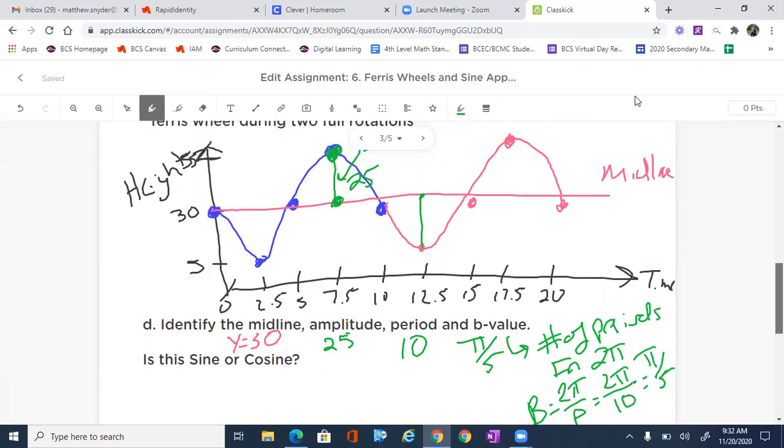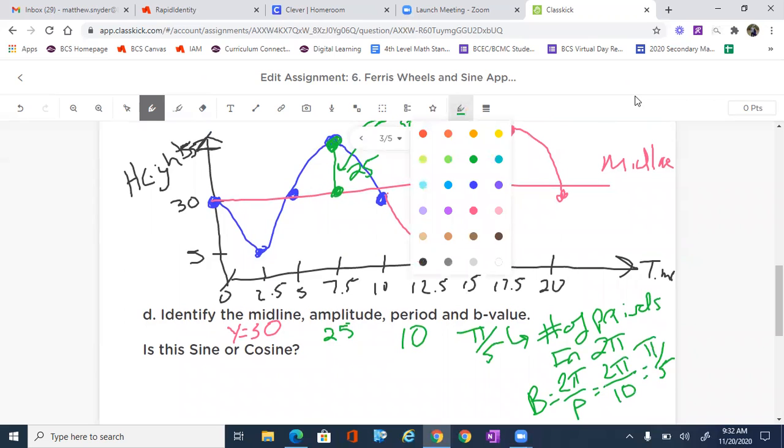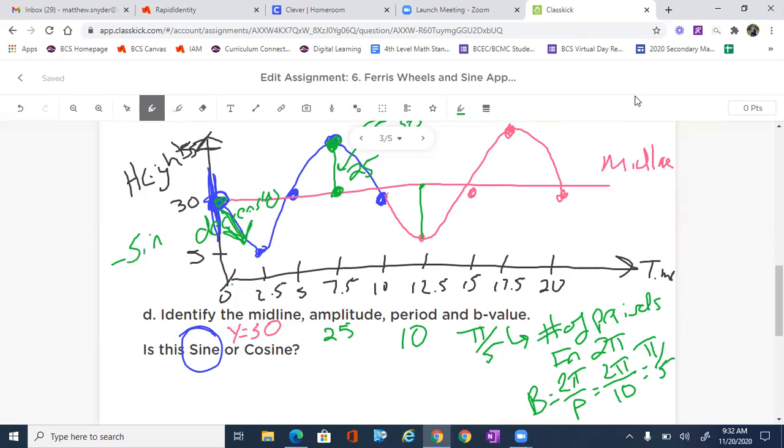Now, is this sine or cosine? Well, sine, remember, starts right at the midline on the Y axis. And this does. So this is sine. Now, the one thing we have to do is we need to pay attention to the fact that it is going down. So this is decreasing from x equals zero on the midline. So this is a negative sine. So I'm going to make sure I put negative sine there.